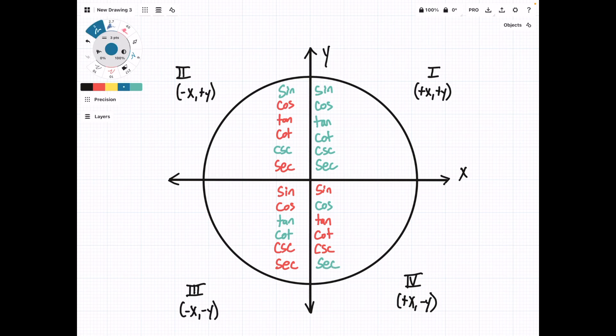The pattern that you'll notice here is that each trig function and its reciprocal will have the same signage. So, for example, sine and cosecant, if we find them in each quadrant, they're always going to have the same sign value, so positive or negative.